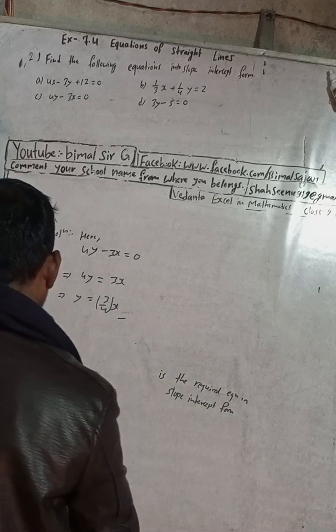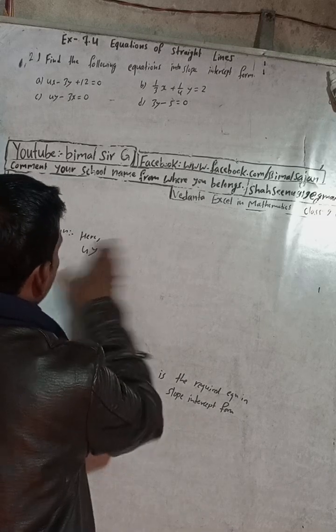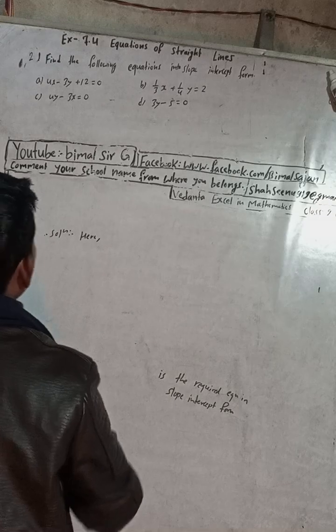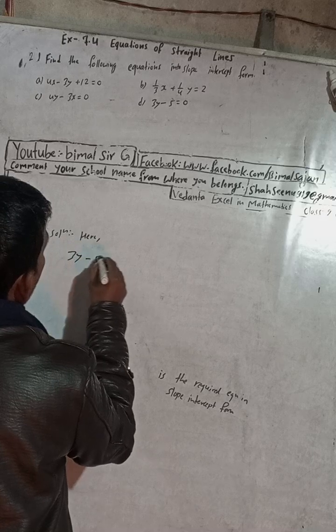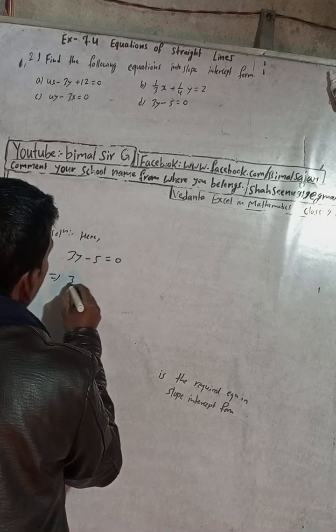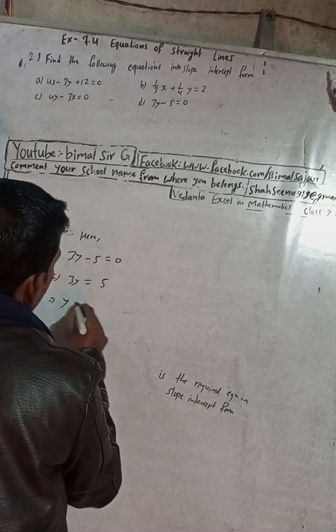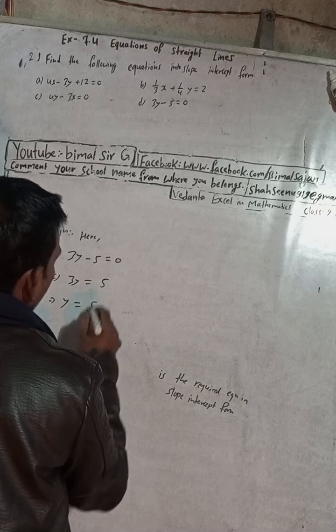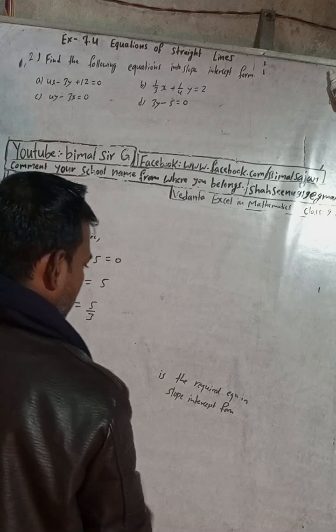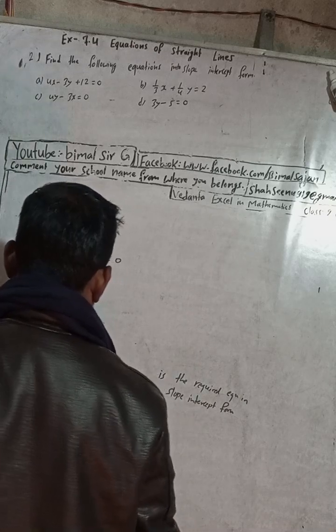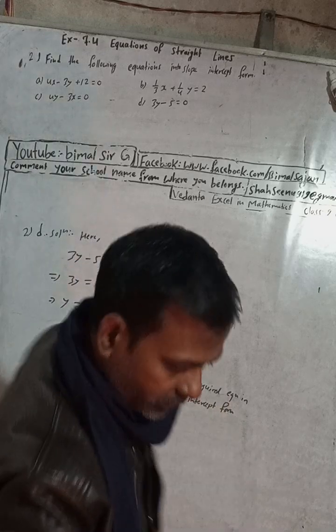Now number d. Question d: 3y - 5 = 0. This implies 3y = 5, so y = 5/3. Here slope is 0. This is the solution. The required equation in slope-intercept form is y = 5/3.